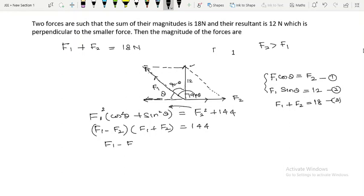F1 minus F2 should be equal to 144 by 18. Ye toh 8 hua, toh yahaan peh meere paas aega F1 minus F2 is equal to 8. Ye equation 4 hui. Solve kar lije toh 2 F1 is equal to 26 aega or F1 aega 13 units. Toh agar F1 13 hai toh F2 kitna aega? 13 minus 8 which is 5. So this is your answer.